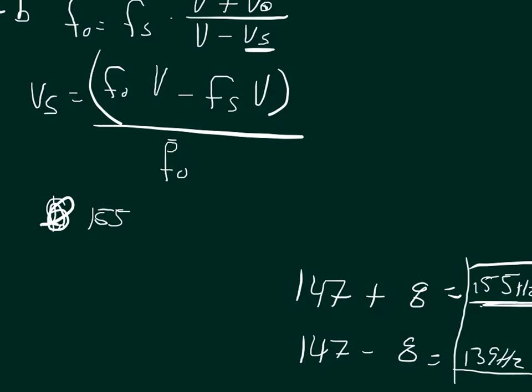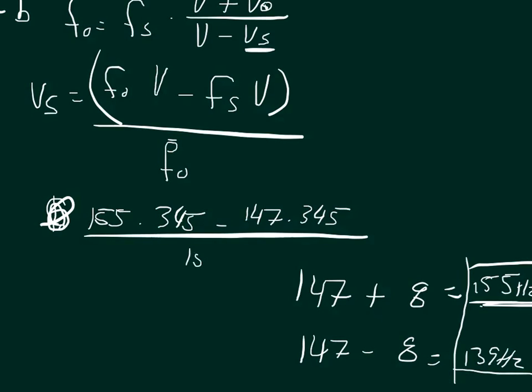We'd say 155 times 345 minus the frequency of the source, which is always 147. So 147 times 345, and divide that by the frequency of the observer again, which is 155. We should get a positive 17.80645, and that would be meters per second.